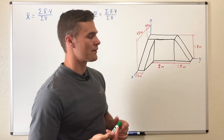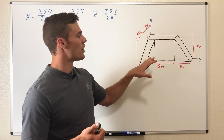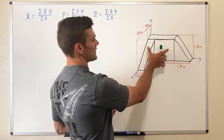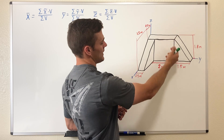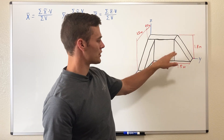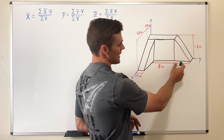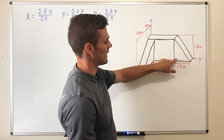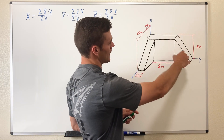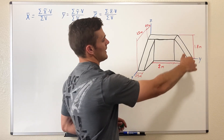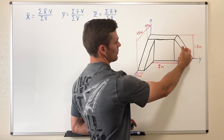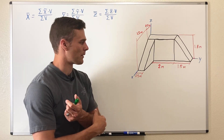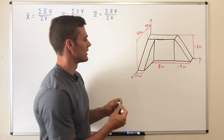We know where the centroid lies on each of those shapes. For the rectangular prism it's going to be half its width, in the middle of its depth, and in the middle of its height. For the two right triangle prisms, it is one third along its base away from the right angle corner, and similarly one third along its height away from the right angle corner. Because it is symmetrical when cut orthogonal to the x-axis, the centroid in the x direction lies in the middle of that width.